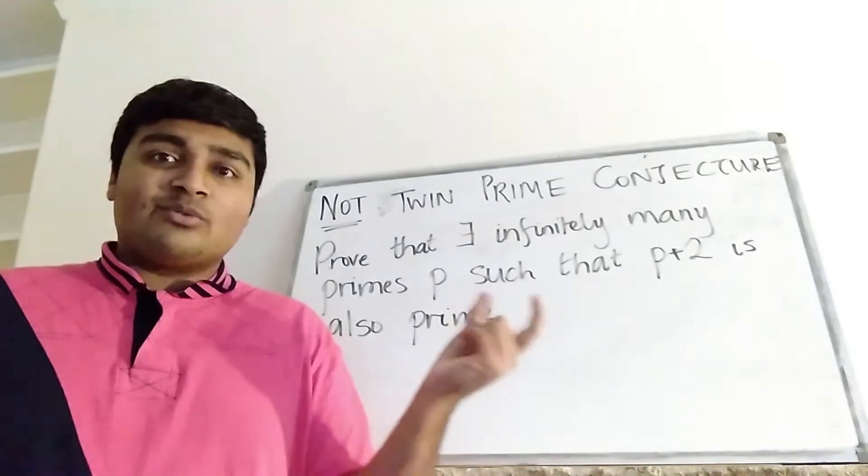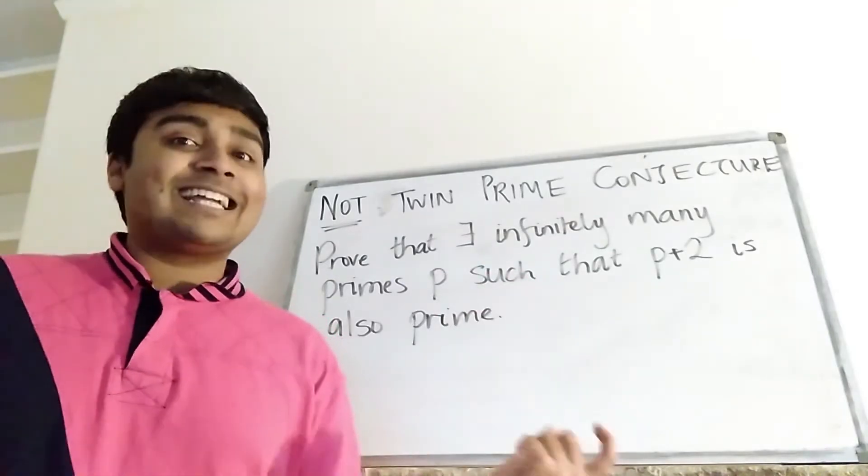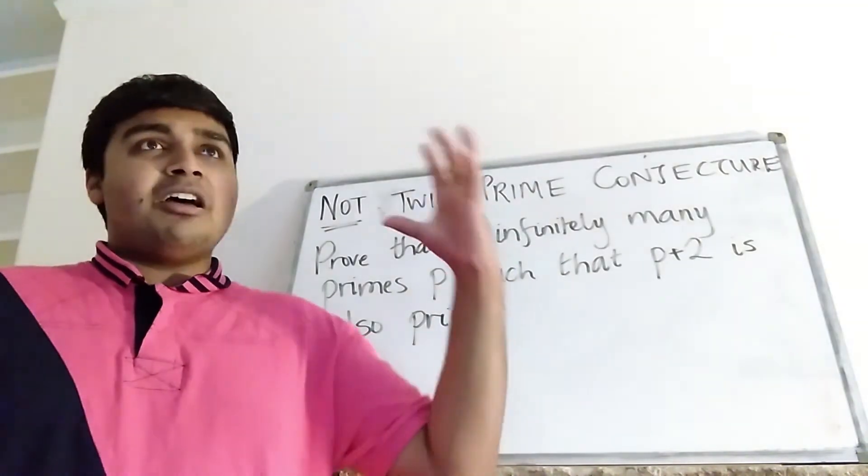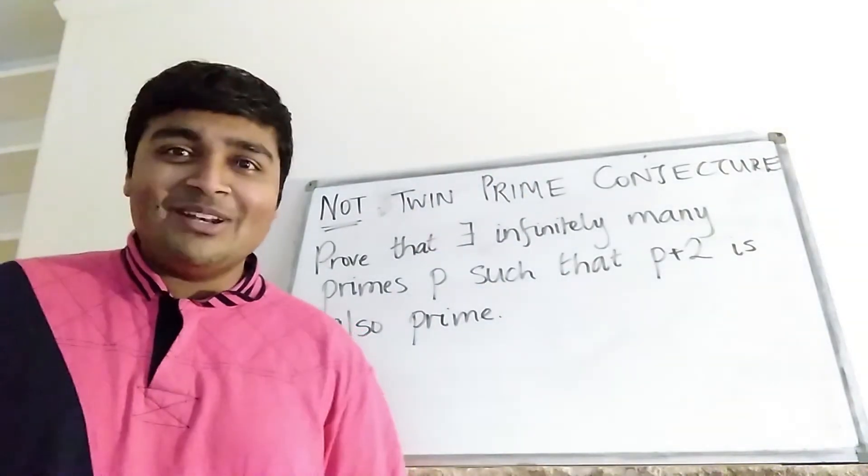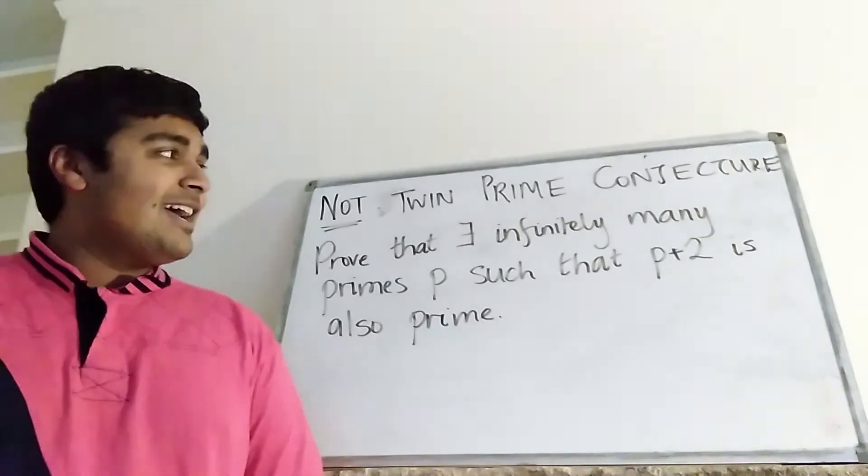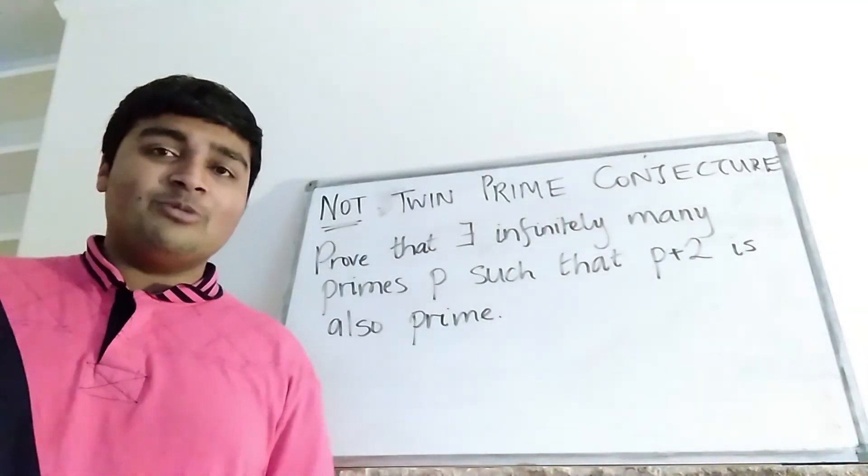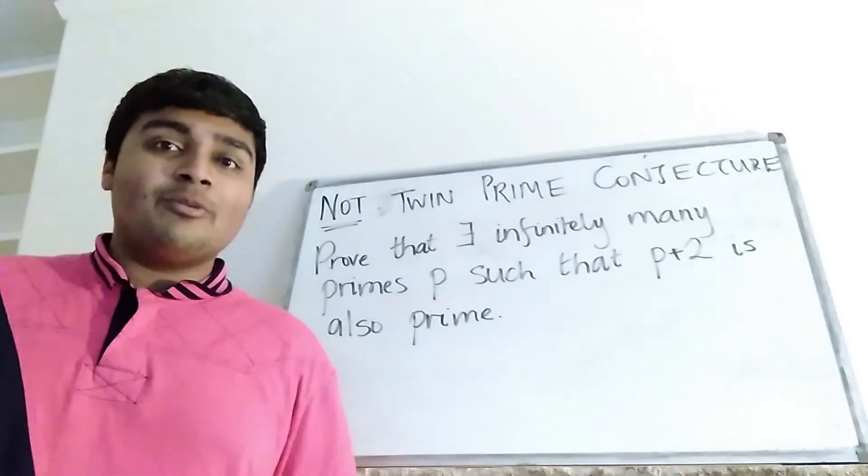So 3 and 5 is a pair of twin primes because they're both prime numbers and they're exactly two apart. 5 and 7 is, 11 and 13 is, 29 and 31 is also another twin-prime pair. And the twin-prime conjecture conjectures whether there are infinitely many of those or not, and that still to date remains unsolved.